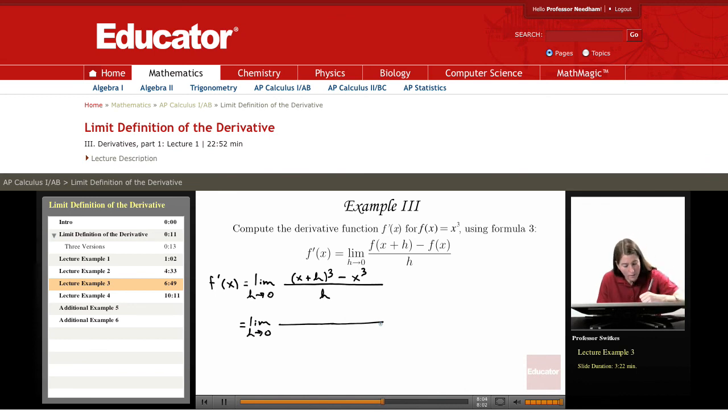And so that gives us x cubed plus 3 x squared h plus 3 x h squared plus h cubed. And then we're subtracting off the x cubed.